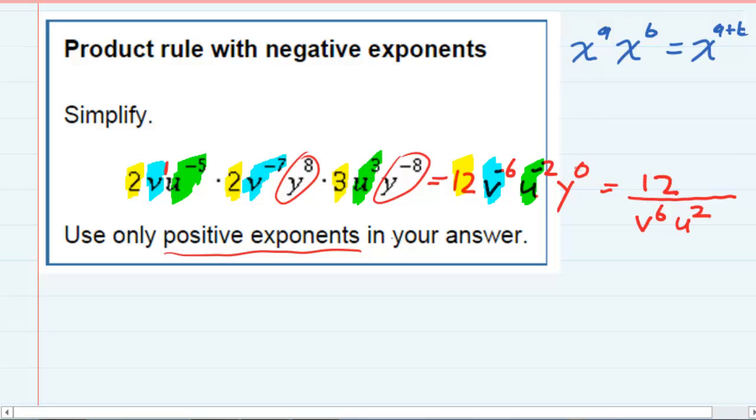And then the y to the 0. y to the 0 is just 1. So since everything here is being multiplied by 1, then nothing changes. 12 times 1 is still just 12. So our simplified answer is 12 over v6 u2.